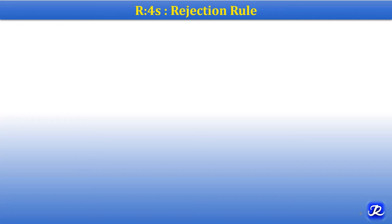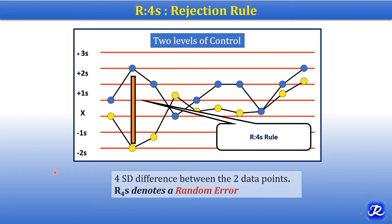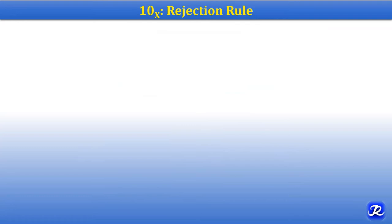The R4S rule is applicable when two levels of control are used. In this condition, there is a four standard deviation difference between two data points. For example, in level 1 control I get a data point here, and in level 2 control I get a data point there, and there is a difference of four standard deviations between the data points of both levels. This is the R4S rule, which denotes random error and is a rejection rule.